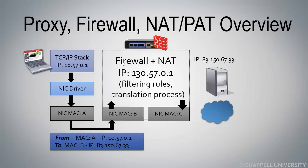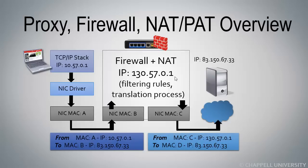When the traffic is handled by this firewall and NATing device, the firewall portion of this box provides filtering rules. If we don't want certain traffic going from one host to another host, or from one port to another port, or inbound on a port, then the firewall rules would define that. When the traffic is sent outbound, this NATing firewall is set up to use an external address of 130.57.0.1, so it will change the source IP address to 130.57.0.1, and it will have replaced the MAC address.